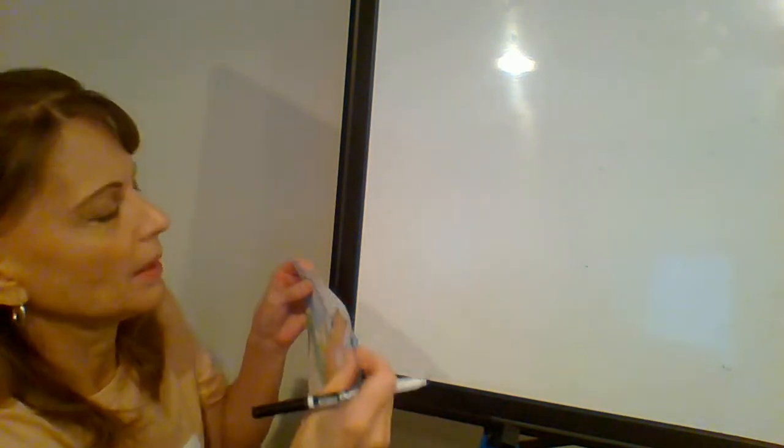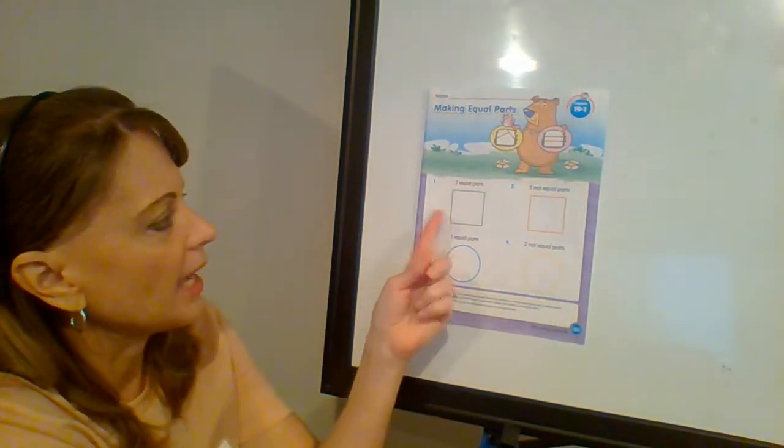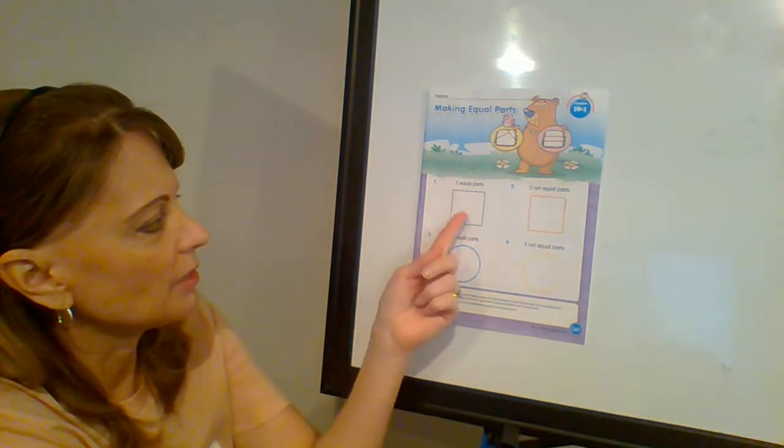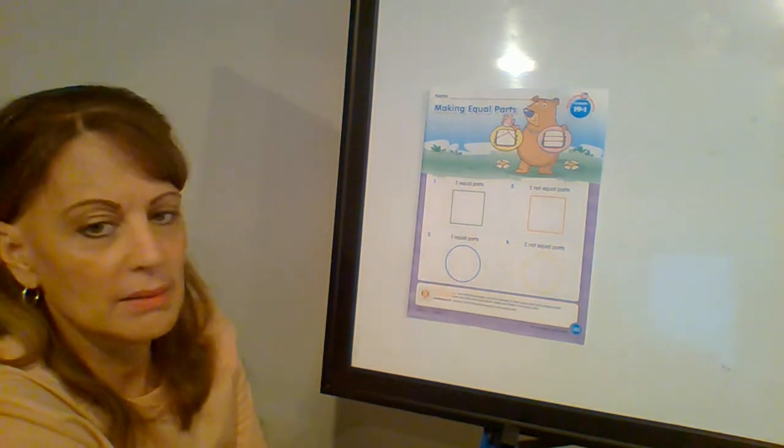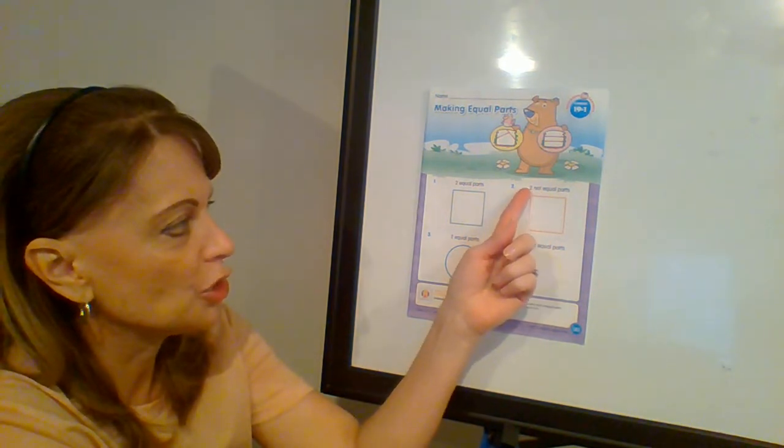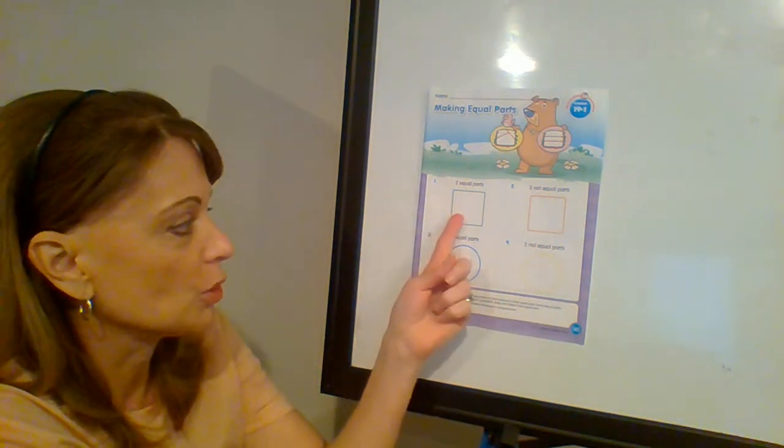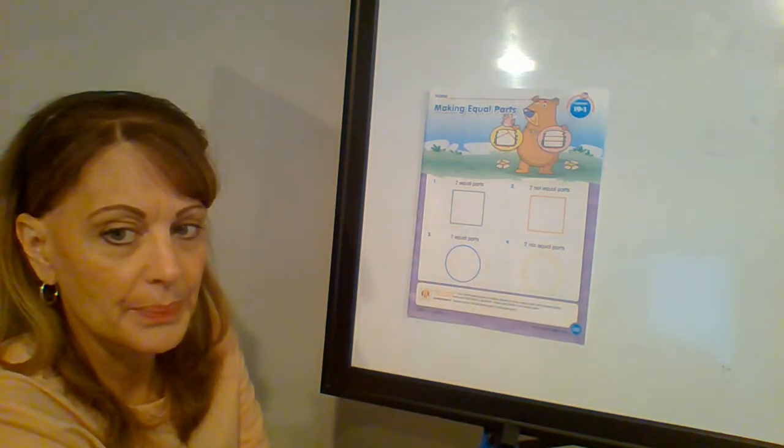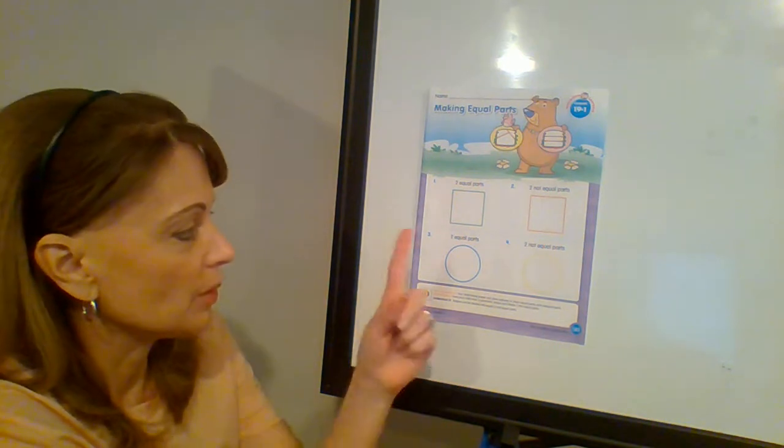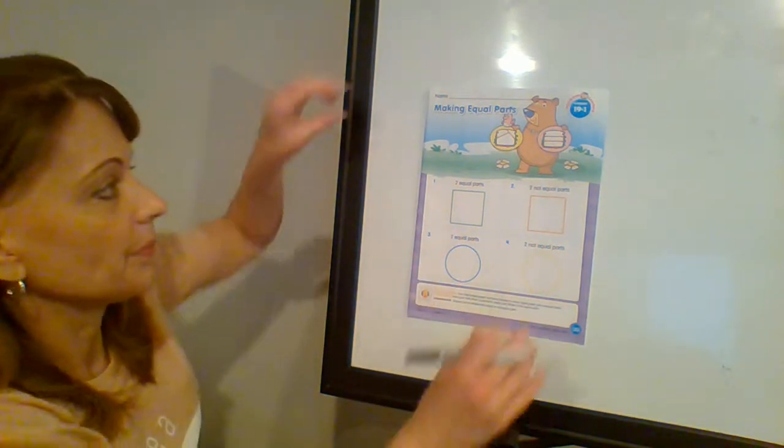Now I want you to flip over to the front. I know, we're doing it backwards today. I want you to follow the directions. So this says, divide this square into two equal parts. Go ahead and do that. Now divide this one into two not equal parts. So for each one, you're just drawing one line. This one will show equal parts. This one will not show equal parts. Do the same thing down here. This one does show equal parts. This one does not show equal parts.